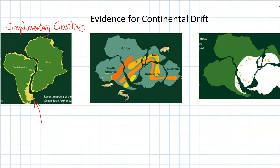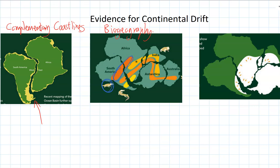Another bit of evidence is the fact that some fossil species are found across different continents which are now completely separated by oceans — we call this biogeography. For example, a fossil species is found across South America and Africa, but those two continents are now separated by the entire Atlantic Ocean. That little four-legged reptile couldn't move between the continents, so the only way it could have lived on both is if they were once joined together.